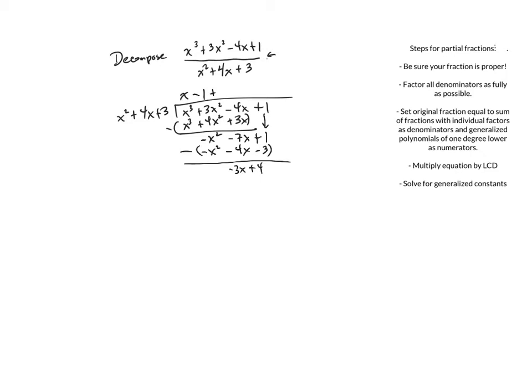I'll write negative 3x plus 4 over the divisor as the fractional part. Essentially I've made a mixed number: x minus 1 is the whole number part, and negative 3x plus 4 over x squared plus 4x plus 3 is the fractional part that still needs to be decomposed.